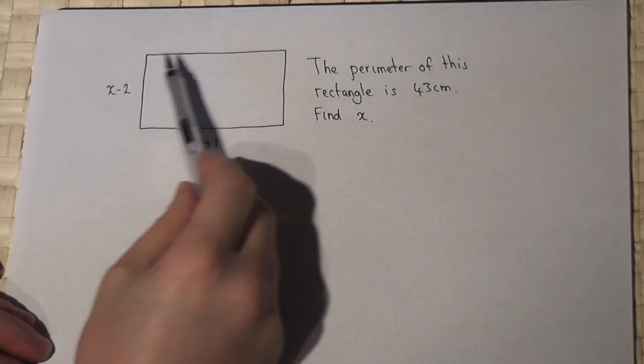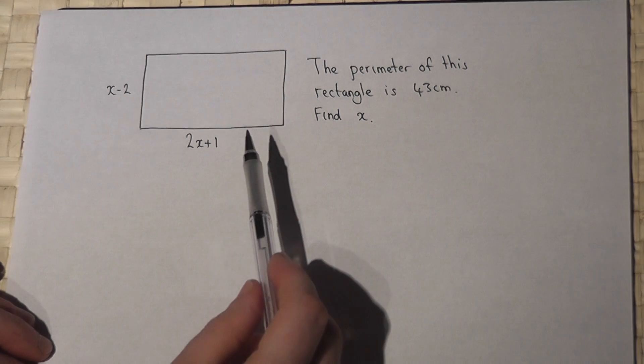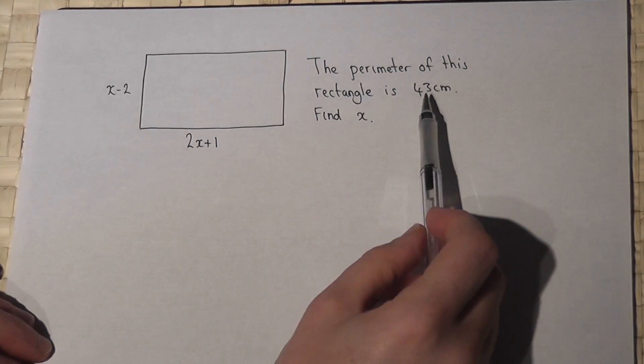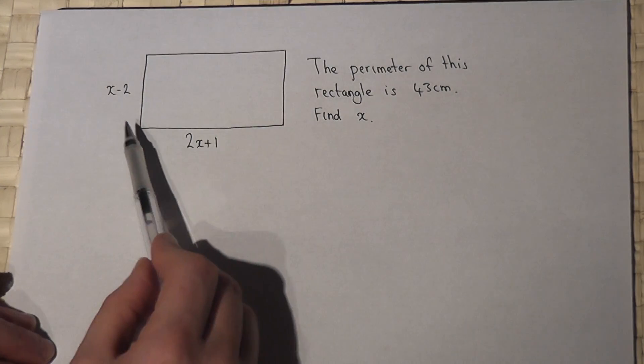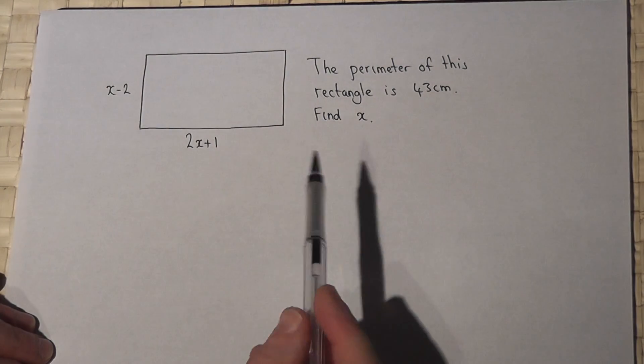In this problem we have a rectangle and we're told that the perimeter is 43 centimeters. Now the perimeter is the distance around the outside of the shape.